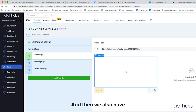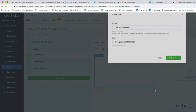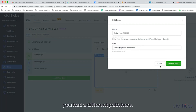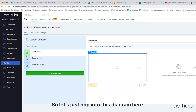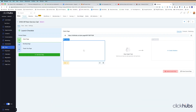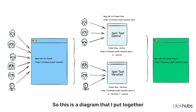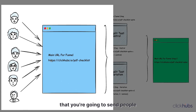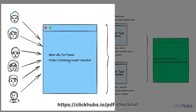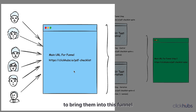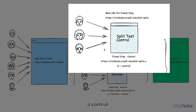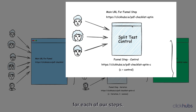We also have some different paths here. If you click on the gear icons, you can see we have yet a different path. I want to explain the differences between all of these, so let's hop into this diagram. This is a diagram I put together. The main URL that you're going to send people to is, for example, clickhubs.io/pdf-checklist. This is the link you're going to give people that will bring them into the funnel and to the first step.